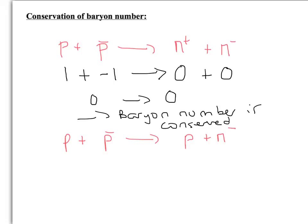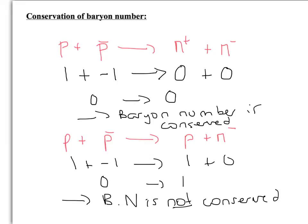So let's have a look at this one at the bottom. We've got one plus minus one, so that's the same as before. Then we've got one plus zero. So you've got zero going to one. I'm just going to do this in shorthand because I'm running out of space, but you should not do that. So the baryon number is not conserved. So that's an interaction that could not happen.